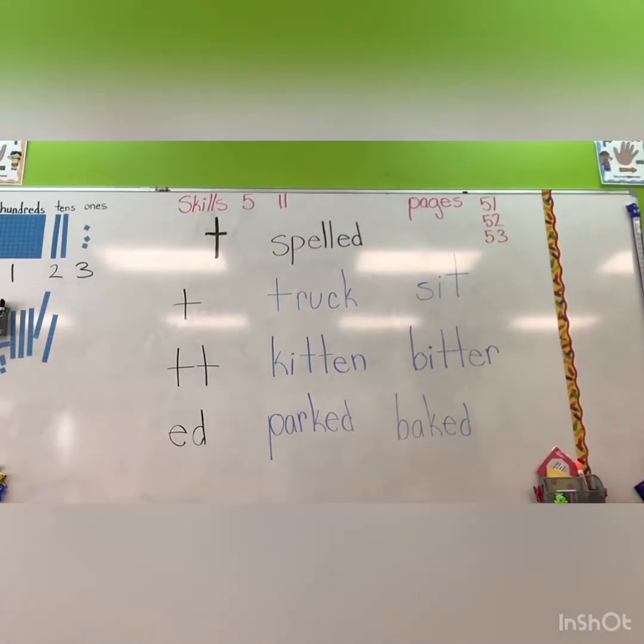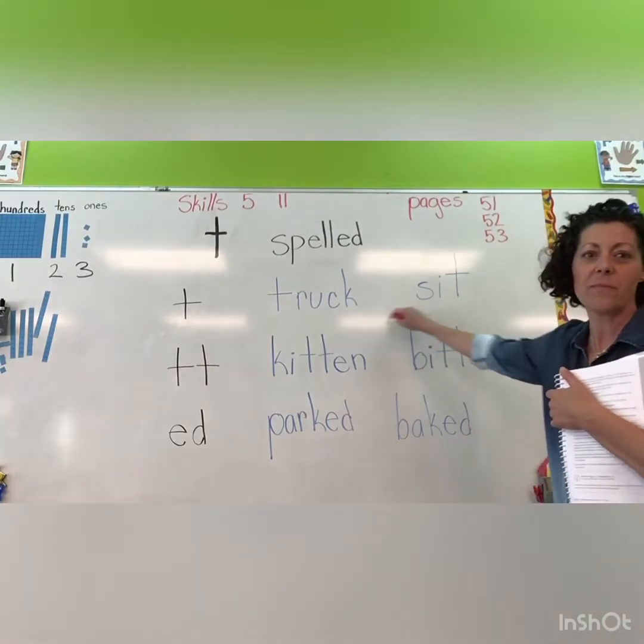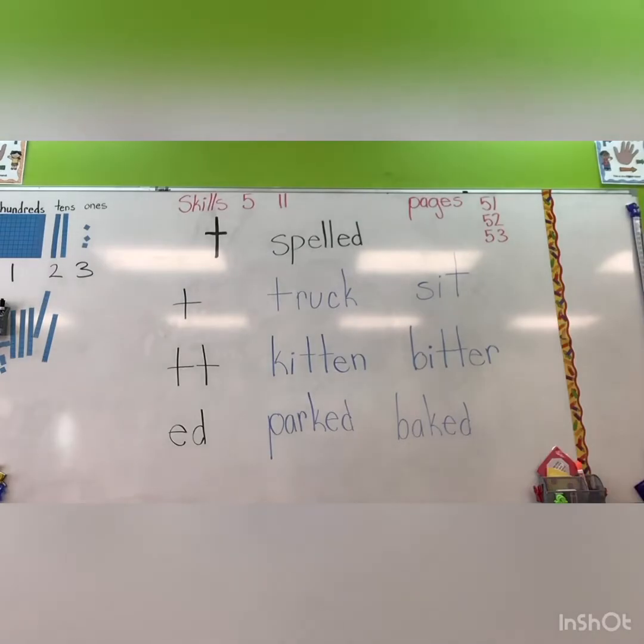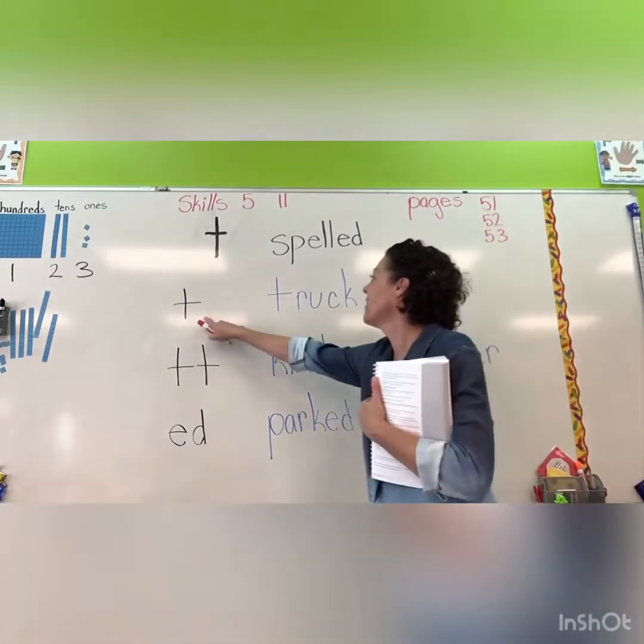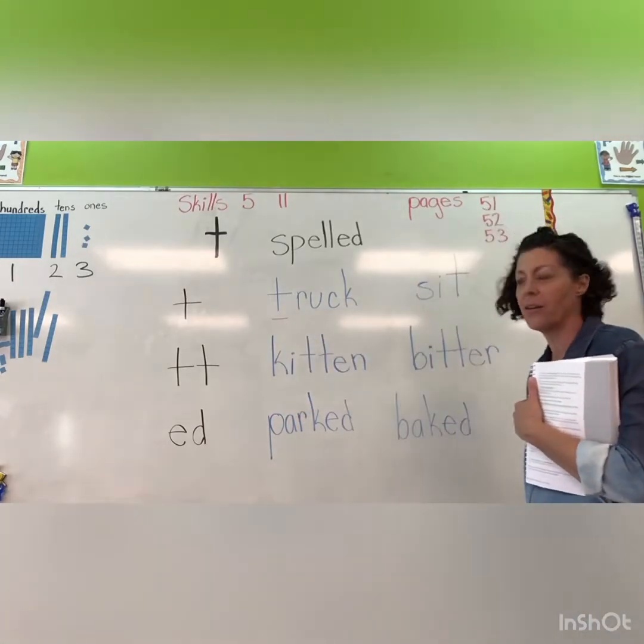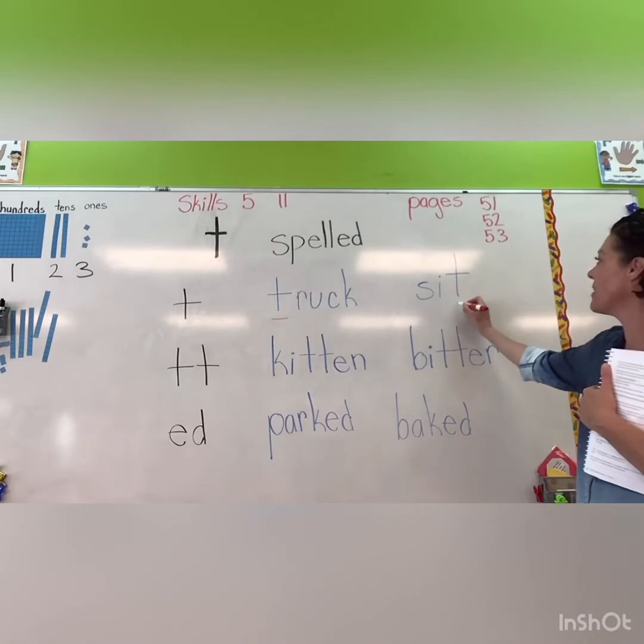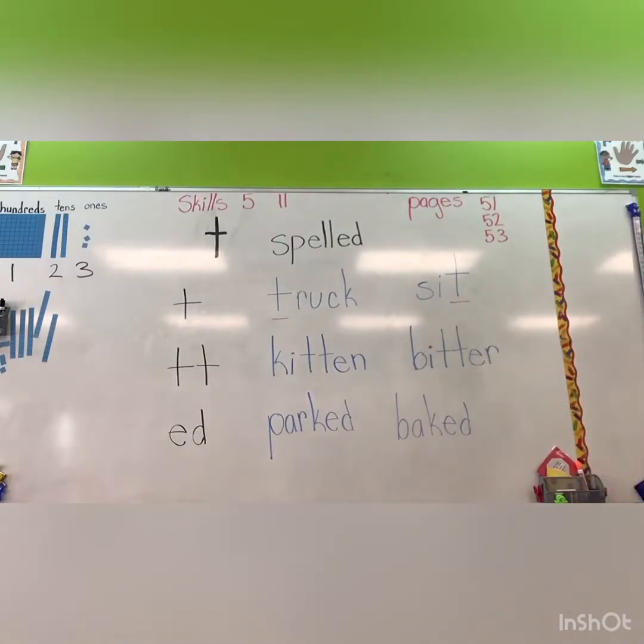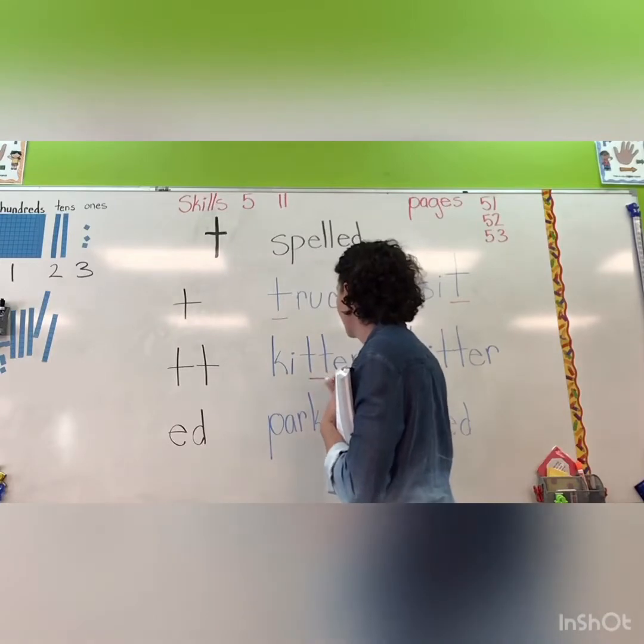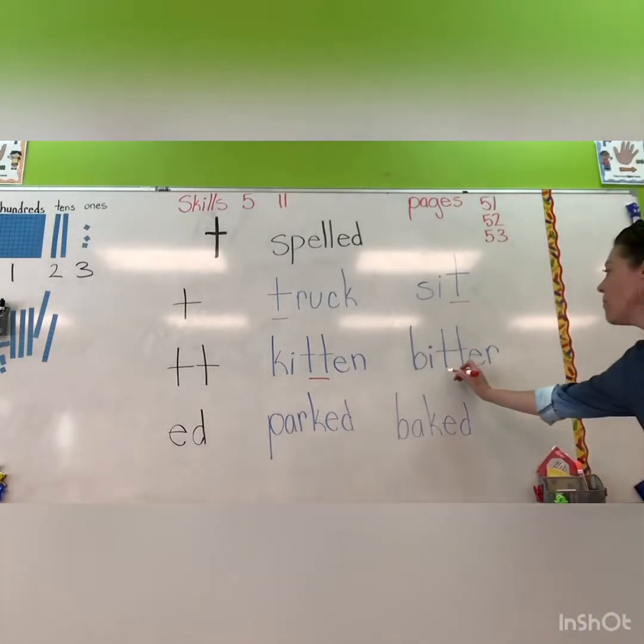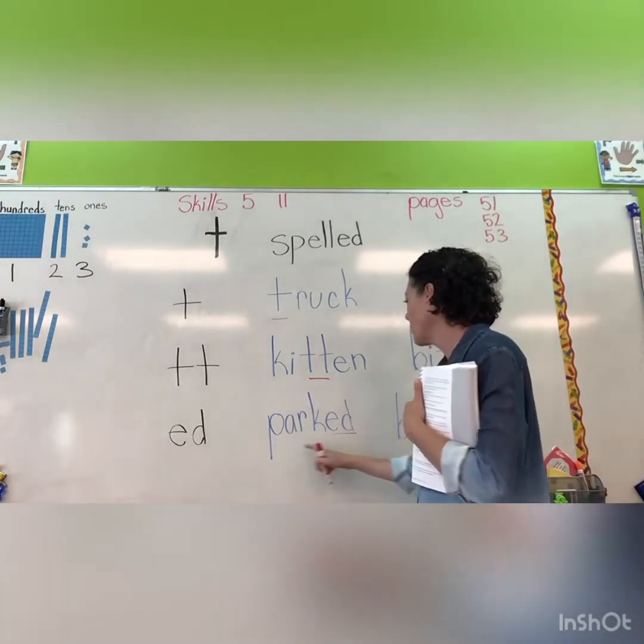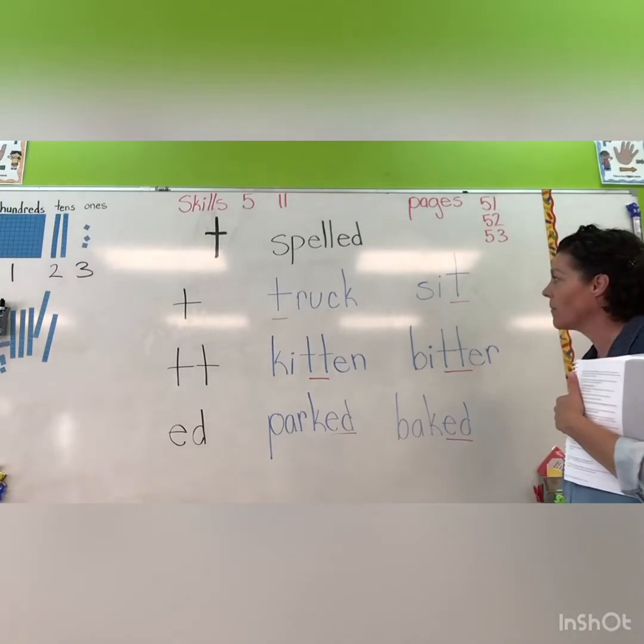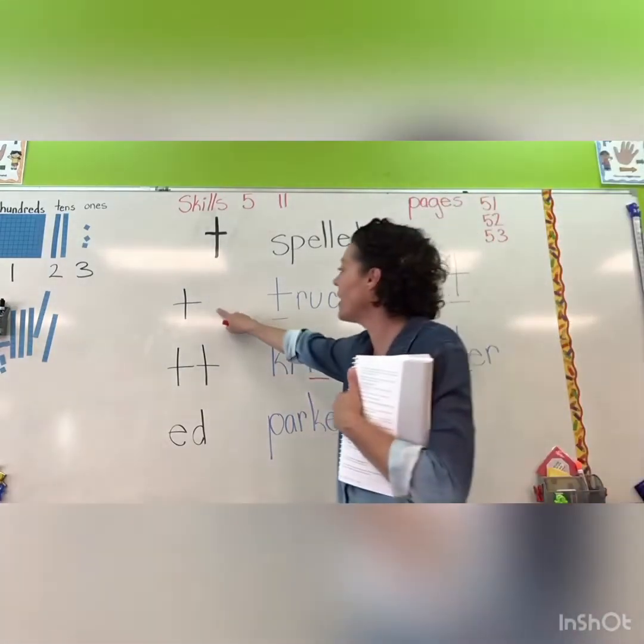See if you can say those words, and then we'll listen to the T sound. Okay, did you hear T? Spell T in truck, truck. We can find that sound at the end in the word sit, truck, and sit. We can spell T with T-T like kitten, or bitter. Then we have T spelled E-D like parked, or barked. T sound three different ways. We have T, T-T, and E-D.